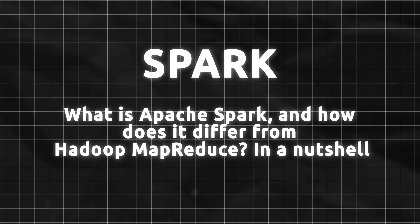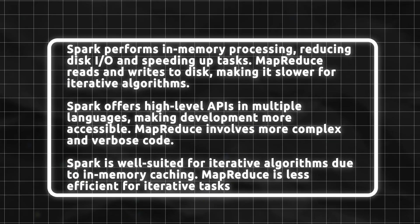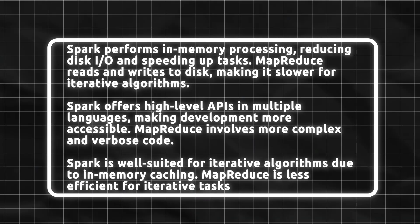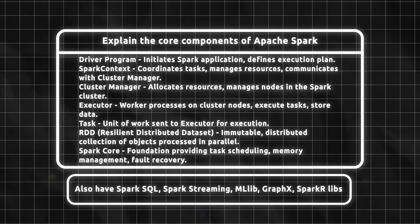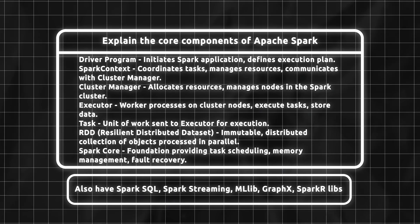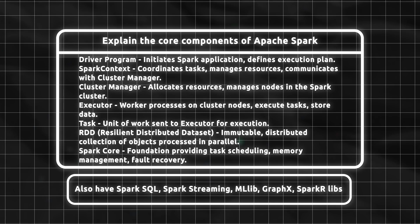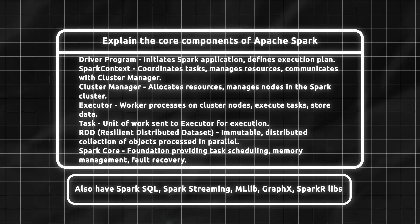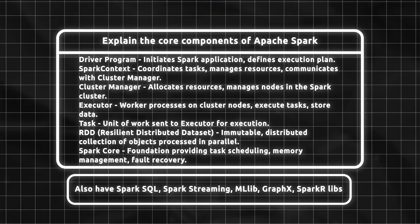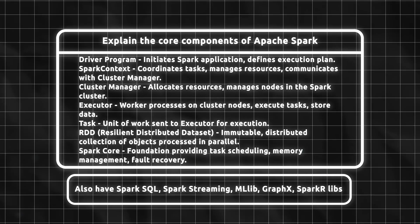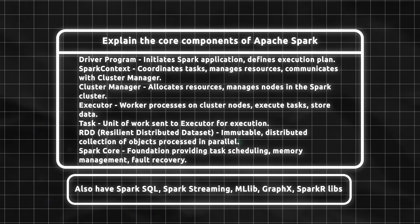Spark. What is Apache Spark and how does it differ from Hadoop MapReduce? Apache Spark is an open-source distributed computing system providing fast in-memory data processing. Spark is faster, more versatile, and developer-friendly compared to MapReduce, offering in-memory processing and a broader range of libraries. Spark performs in-memory processing, reducing disk I/O and speeding up tasks, whereas MapReduce reads and writes to disk, making it slower for iterative algorithms. Explain the core components of Apache Spark: Driver program - initiates Spark application and defines the execution plan. Spark context - coordinates tasks, manages resources, and communicates with the cluster manager. Cluster manager - allocates resources and manages nodes in the Spark cluster. Executor - processes work on cluster nodes, executes tasks, and stores data. Task - unit of work sent to an executor for execution. RDD (Resilient Distributed Dataset) - immutable distributed collection of objects processed in parallel. Spark core provides task scheduling, memory management, and fault recovery.